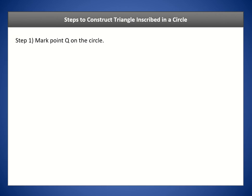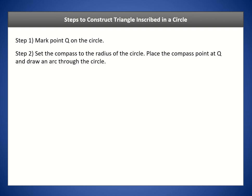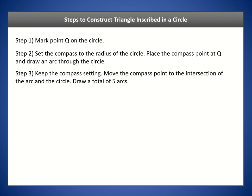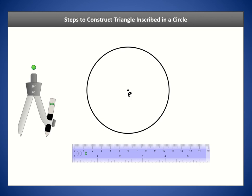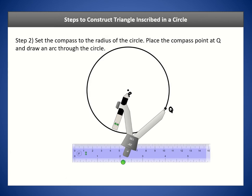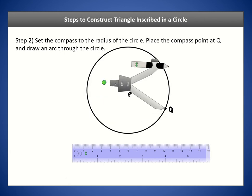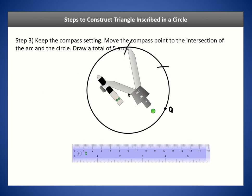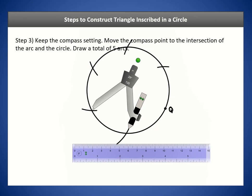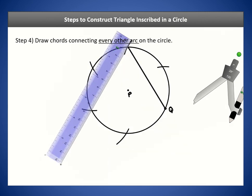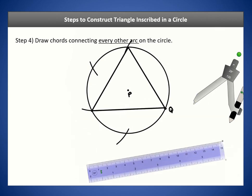To construct an equilateral triangle inscribed in a circle, the steps are identical to the hexagon up until the last part: mark Q on the circle, set the compass to the radius, draw five arcs total. This time, instead of connecting every consecutive arc, connect every other arc, then erase your scratch arcs to reveal the inscribed triangle.